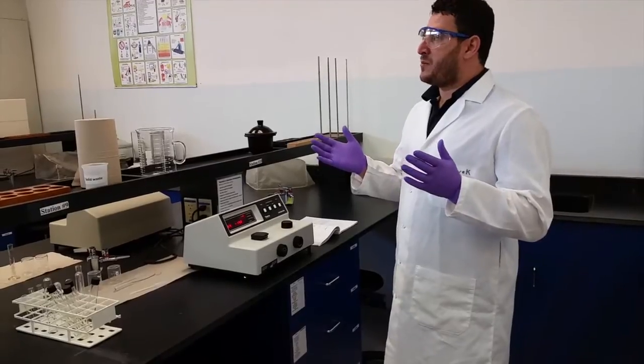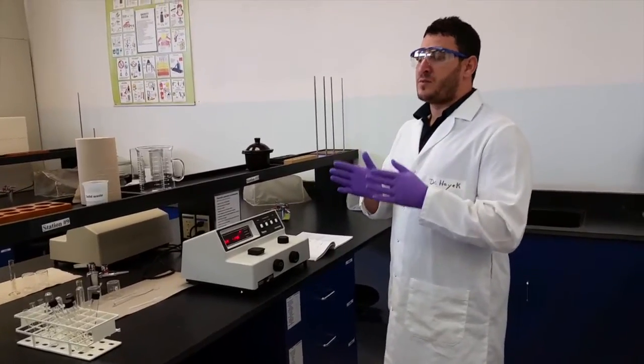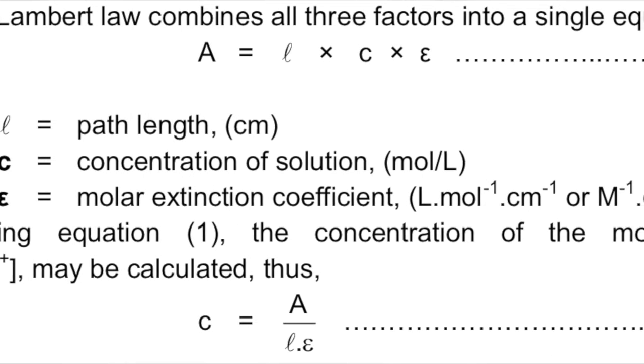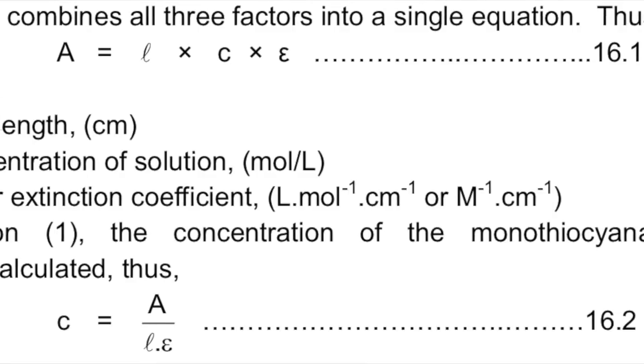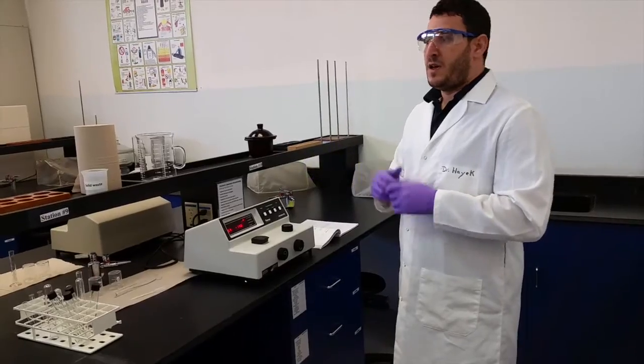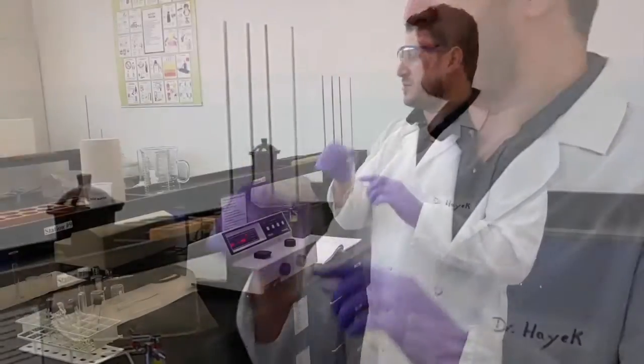Beer-Lambert says absorbance equals molar absorptivity times L, which is the light path or the length of the cell, times concentration. The length of the cell, we're using a one centimeter tube, so L equals one centimeter.